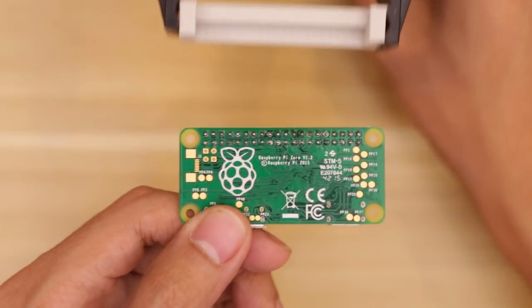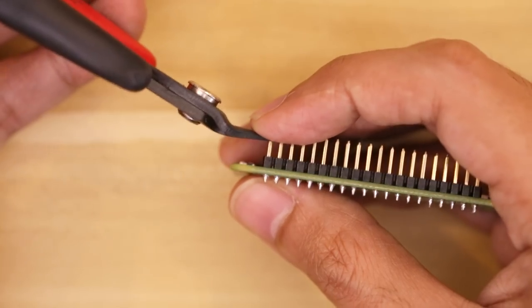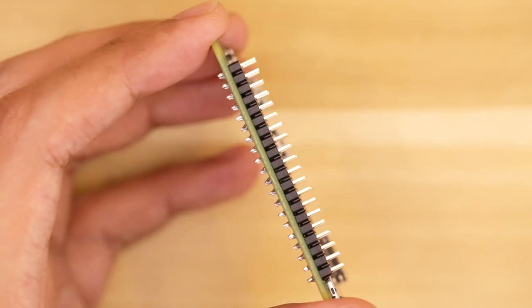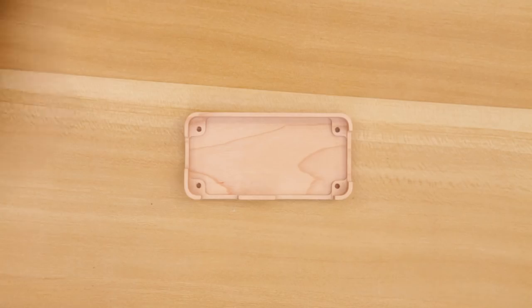Once that's done, we can move on to the rest of the assembly, which is probably the easiest part of the build. I had to shorten the header pins, so I used a pair of flush cutters to cut the pins in half. I just had to be careful not to cut them too short and keep them about the same height.